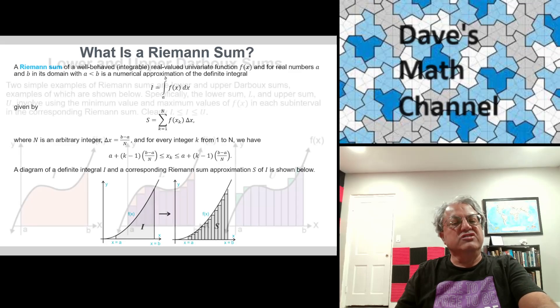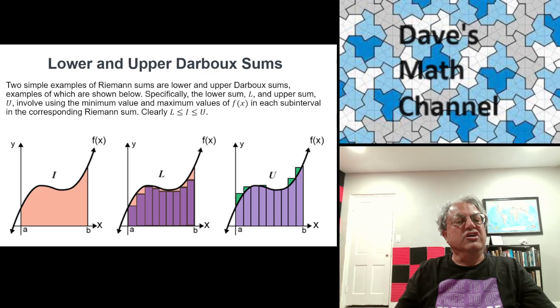And anyway, Darboux sums are specific examples of Riemann sums. Those are just ones where we take, I call them L and U here. L is the lower Darboux sum and U is the upper Darboux sum. These give you sharp lower and upper bounds. These are nice, even though they're very crude estimates in general of the value of I, the value of the integral you're trying to calculate. They give you sharp lower bounds and upper bounds. It's always true that L is less than or equal to I is less than or equal to U.